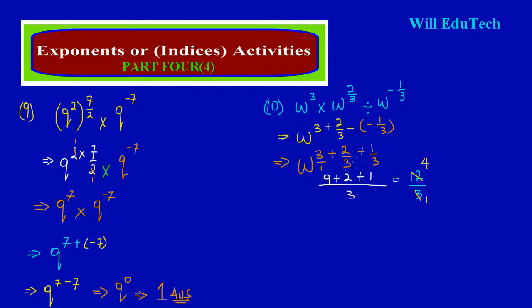12 upon 3 can be simplified: 3 into 3 goes once and 3 into 12 goes 4 times. So remember this is the power we are calculating, and we write our final answer as W raised to the positive 4. That's our answer — it is as simple as that! Feel free to ask a question if you're still not sure and we'll get back to you as soon as possible.